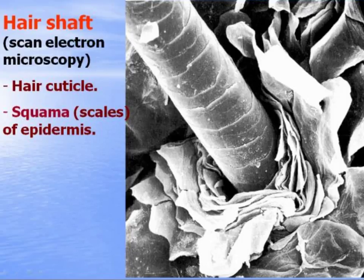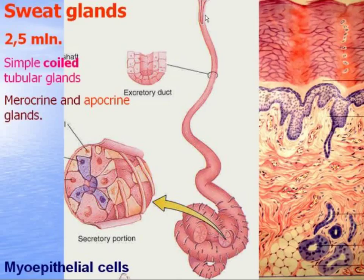Sweat glands are simple coiled tubular glands. There are about two and a half million of them in the skin.